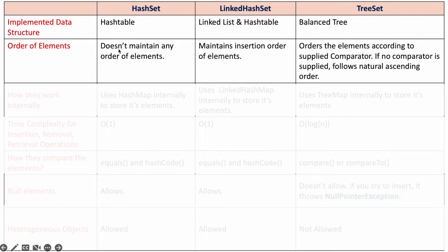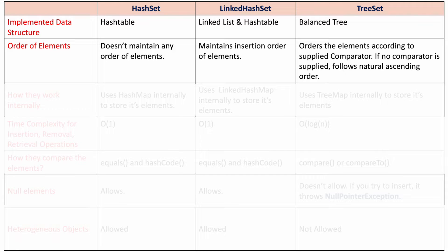HashSet does not maintain any order of its elements — the elements in HashSet will be ordered according to the hash code. LinkedHashSet elements will be ordered according to the insertion order, because LinkedHashSet is implemented using a linked list, so it follows insertion order. TreeSet orders the elements according to a supplied comparator; if no comparator is supplied, it follows the default natural sorting order.